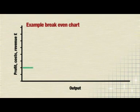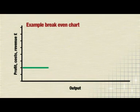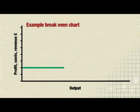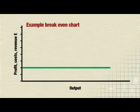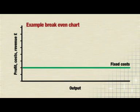Then, draw on the fixed cost line. This will always be a straight horizontal line, because the fixed costs don't change.